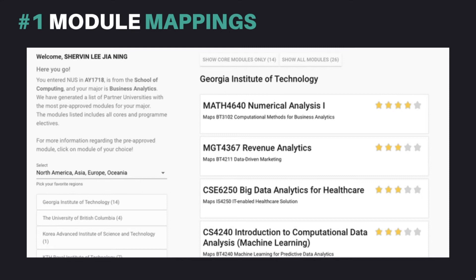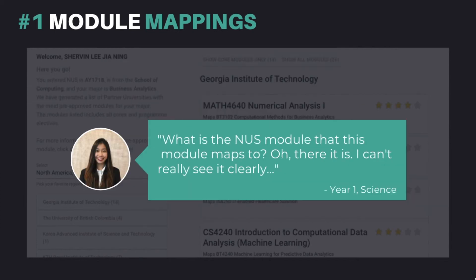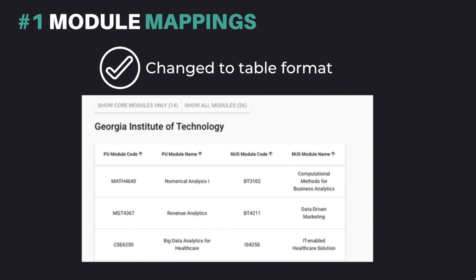Our first place feature is the module mappings by university. This feature was praised by users for significantly reducing their time taken to do their module mappings. Previously, users estimated the time taken for module mappings as 20 hours. With this feature, they estimate their time taken to be reduced to 5-10 hours. Users also liked that modules they have previously taken are not included in the list of modules, so they can focus only on the modules that they are required to take. However, users found that the layout of the modules was not intuitive and it was not clear what NUS module the partner university module maps to. Thus, we decided to change the layout to a tabular form, clearly stating the partner university module code and name and the NUS module code and name.